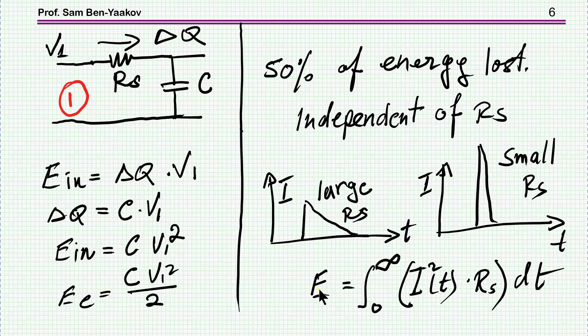You can do a parallel analysis in another way. This way will be to take the I² times RS as the power loss of the resistor. Now notice that if RS is large, the current will be small. If RS is small, the current will be large proportionally. And it turns out that when you take this integral for these two cases, this integral comes to be independent of RS.